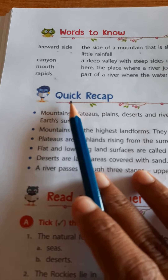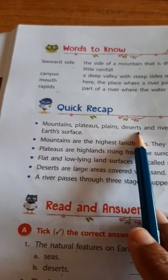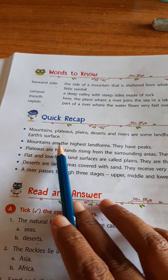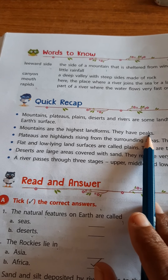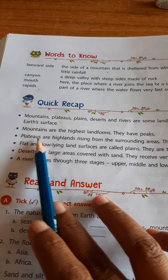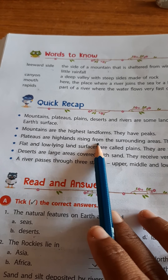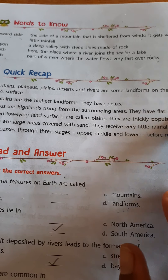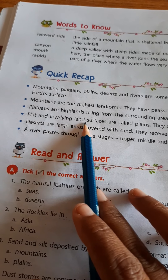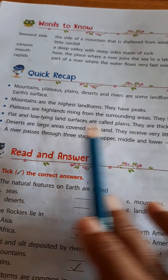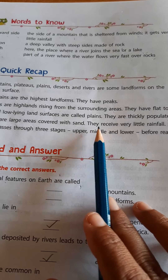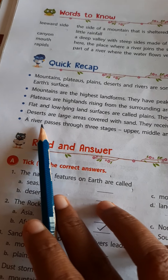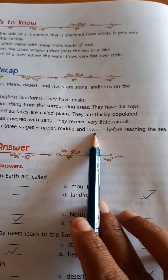Once you read this quick recap, children - mountains, plateaus, plains, deserts and rivers are some landforms on the earth's surface. Mountains are the highest landforms; they have peaks. Plateaus are highlands rising from the surrounding areas; they have flat tops. Flat and low-lying land surfaces are called plains; they are thickly populated. Deserts are large areas covered with sand; they receive very little rainfall. A river passes through three stages - upper, middle and lower - before reaching the sea.